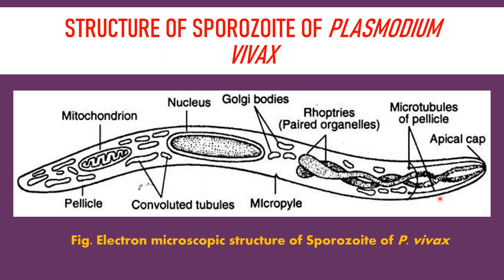The anterior end of the sporozoite consists of a cup-like depression called the apical cup, which is made up of three or more contractile rings. A pair of long secretory paired organelles opens into the apical cup. These probably secrete proteolytic enzymes which facilitate the entry of the sporozoite into the liver cell.